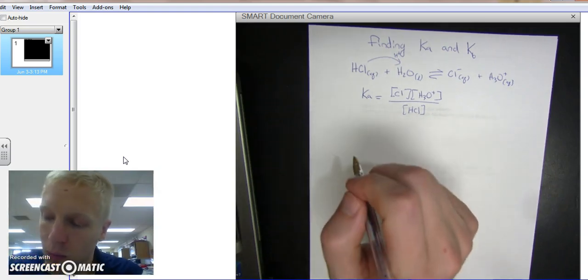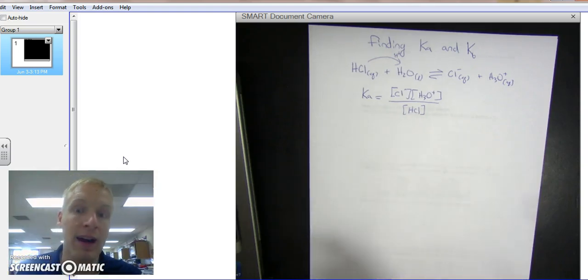Doing another example, what if we have a base? Well, then you find the Kb. Kb is for base, Ka is for acid.